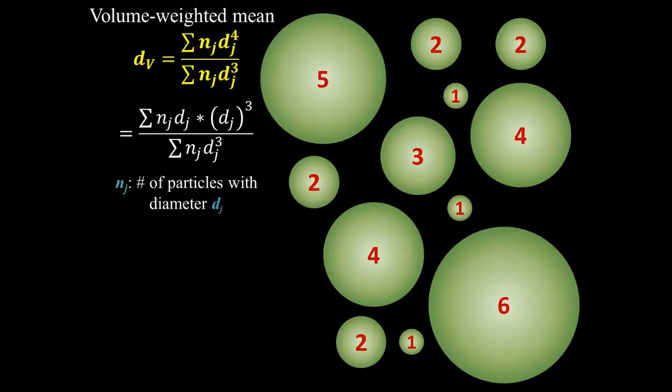This brings us to the second way to calculate average diameter, volume weighted mean diameter dv. This metric is often used in mining and milling applications where it's also called the dbrucker mean. In this calculation, each particle is weighted by a factor of the diameter cubed, so a particle that is 100 nanometers in diameter counts a thousand times more than a smaller 10 nanometer particle in calculating the average.